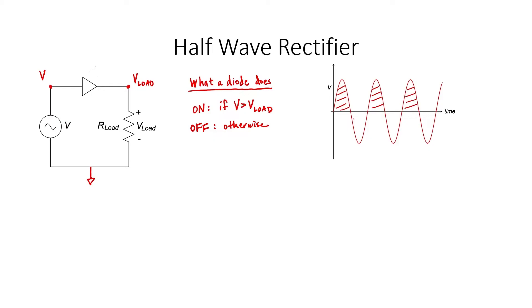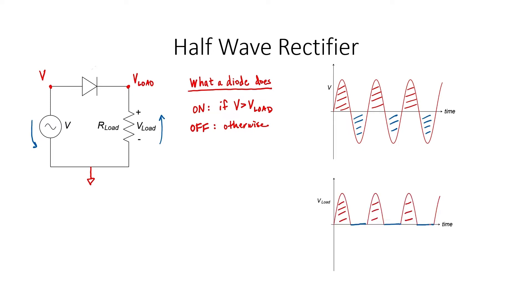Let's consider what happens during the negative half cycles. If the source voltage drops below zero, it means that current would like to flow counterclockwise through this circuit. However, that can't happen because the diode is going to block the current flow. Therefore, no current actually flows through the load resistor. If no current flows through the load resistor, then the voltage is zero. The waveform that we end up with is still an AC signal because it's not constant with respect to time, but you can see that it's always on the positive side of the graph. So that's the first step in making a DC signal from an AC signal.